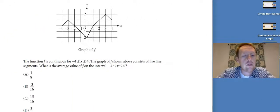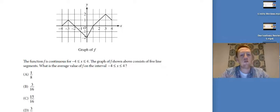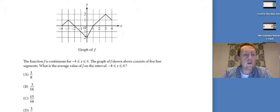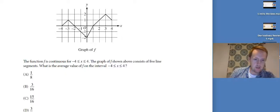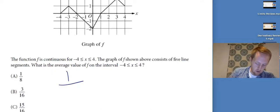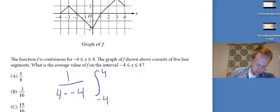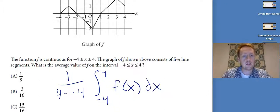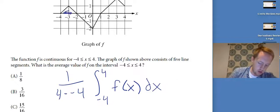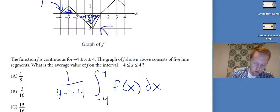The function f is continuous from negative four to four. The graph consists of five line segments. What is the average value of f on the interval negative four to four? Average value uses the one over b minus a formula, so I have one over four minus negative four, times the integral from negative four to four of f(x) dx.